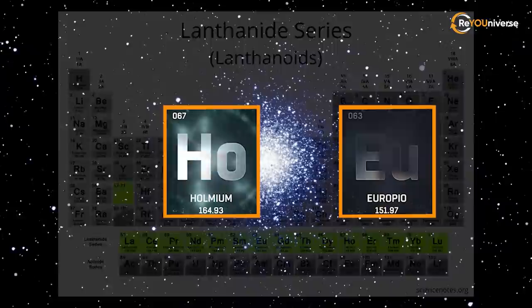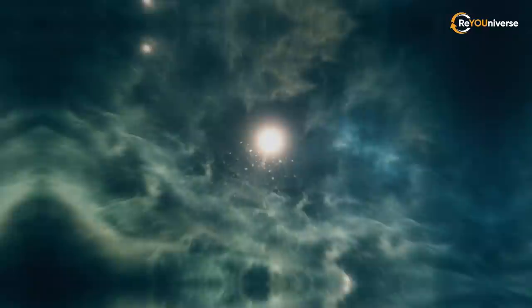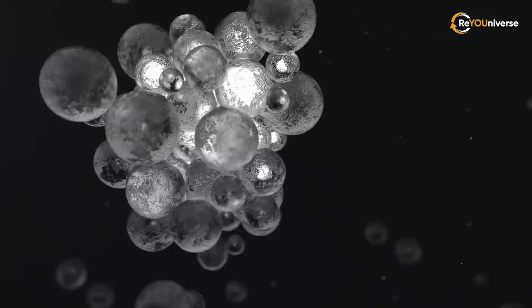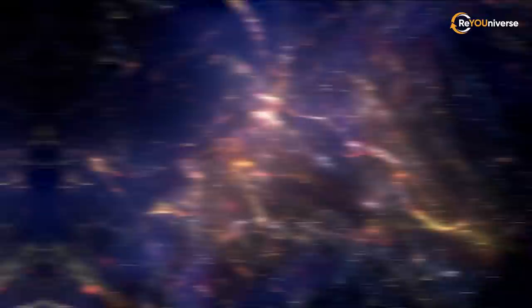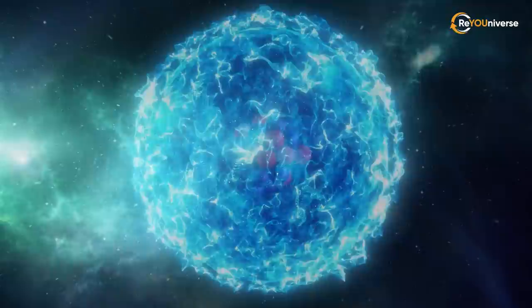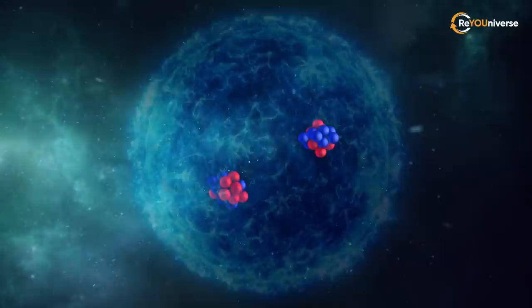One theory suggests this might be because it contains elements and isotopes scientists have never discovered in nature. First, it appears from the spectrum that it contains almost no iron, which is very strange by itself. Second, this star is rich in lanthanides, even heavier elements such as holmium and europium. Professor Chibialsky has suggested that this star has existed long enough to create a lot of heavy elements. This star also contains atoms that are not supposed to be there. In particular, atoms of promethium and plutonium. These elements and their isotopes have a relatively short half-life.